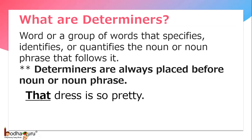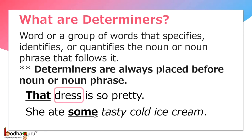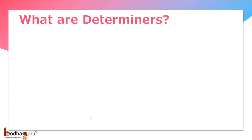For example, that dress is pretty. Here, the determiner is coming in front of the noun, which is 'dress'. She ate some tasty cold ice cream. Here, 'tasty cold ice cream' is the noun phrase and 'some' is the determiner.